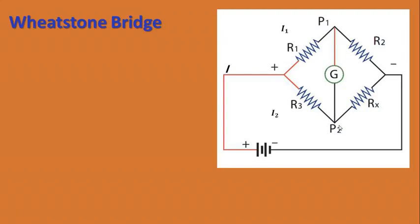Now, why have we created such a bridge between these two points? This is the basic concept of the Wheatstone Bridge. At points P1 and P2, if there is a potential difference, then current would flow through it. But if there is no potential difference between P1 and P2, there would be no current, because current only flows when there is a potential difference.